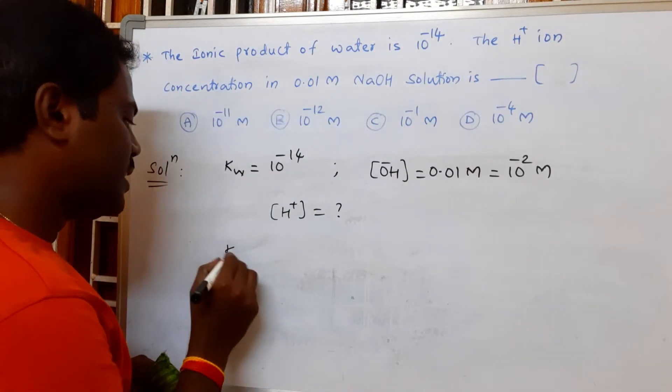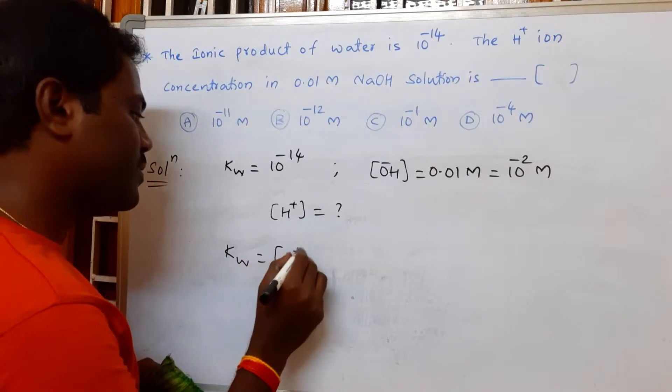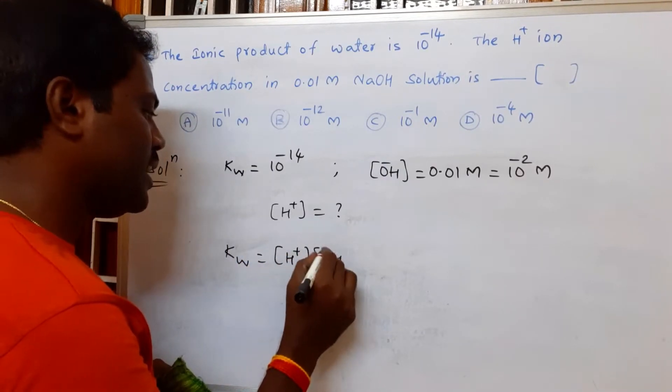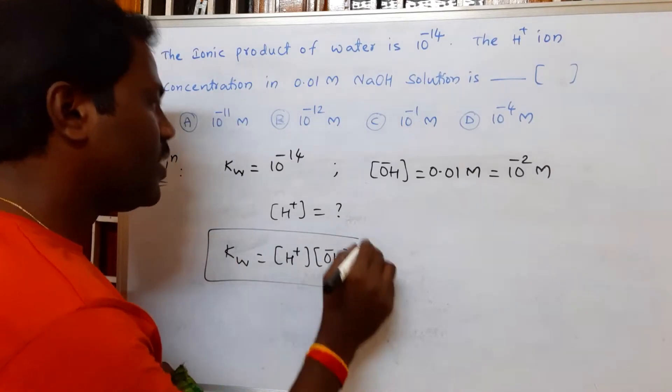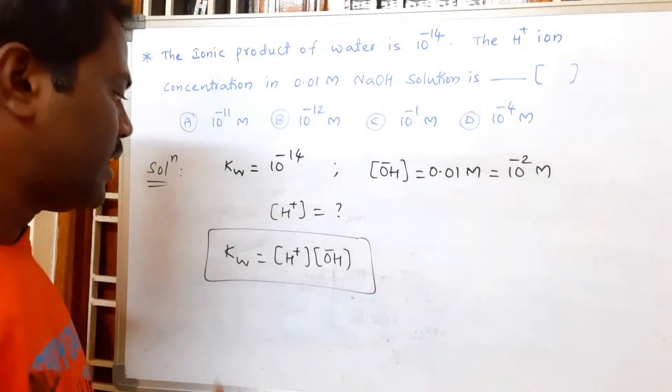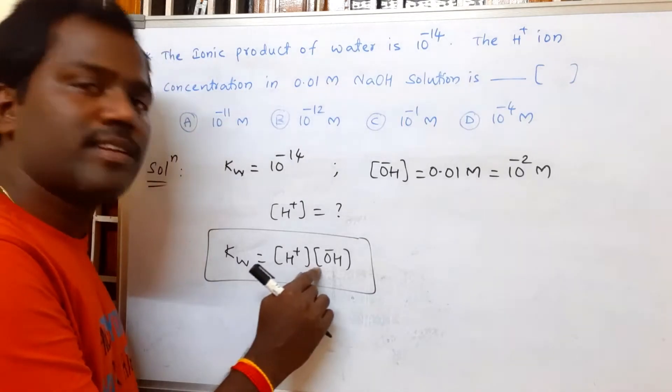We know that KW equals the concentration of H+ times the concentration of OH-. This is the equation for ionic product.